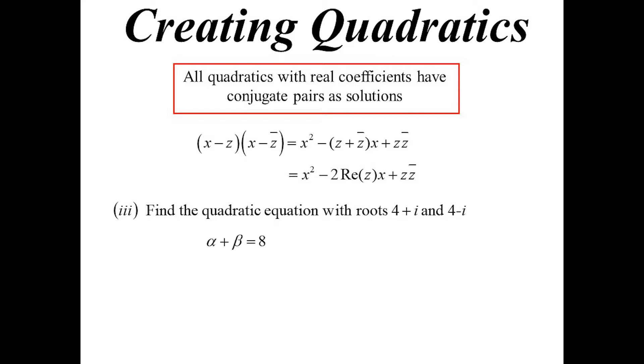But now I don't need to because I can say, well, hang on, I know the sum of the roots, going back to the quadratics, the sum of the roots is 8, which happens to be twice the real. So the coefficient of X will be minus twice the real. So 4 plus 4 in this case is 8.